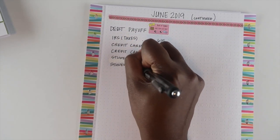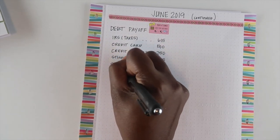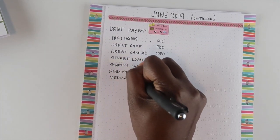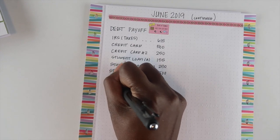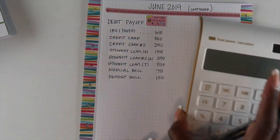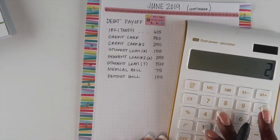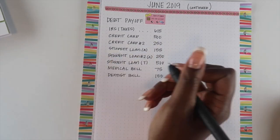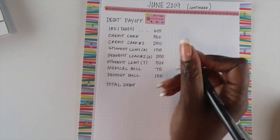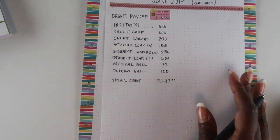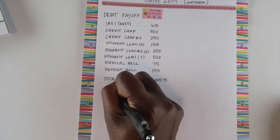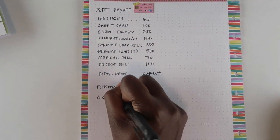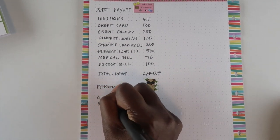I'm working on my debt payoff category, which includes our taxes, credit cards, student loans, medical bill, and dental bill. These are the amounts I would love to pay to pay down our debt, but if it doesn't happen, this category will probably be the first to get cut — or in other words, the last to get paid. I'll pay towards these at the end of the month once I see how much extra money we actually have, but I'll cover the house category first.